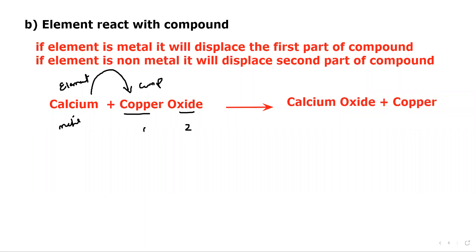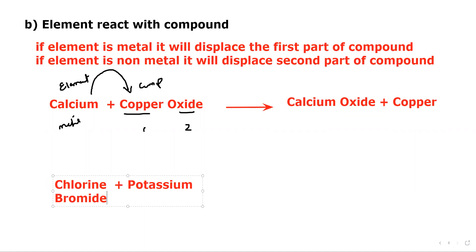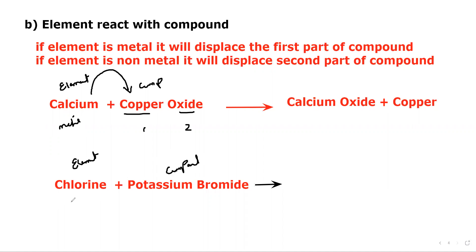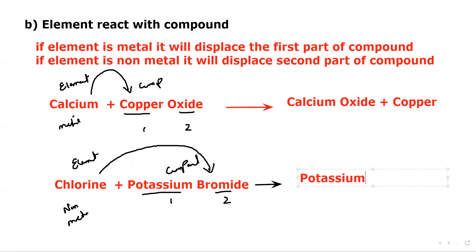If the element is a non-metal, it will displace the second part of the compound. For example, chlorine plus potassium bromide: chlorine is a non-metal element belonging to group 7, and potassium bromide is a compound. Potassium is the first part and bromide is the second part. Because chlorine is a non-metal, it displaces bromine — the second part — producing potassium chloride plus bromine.